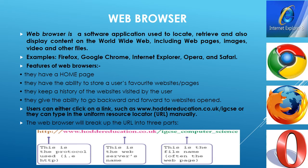The web browser breaks up the URL into three parts. For example, www.hardereducation.co.uk/igcse_computer_science is converted into: the protocol (http:// or https://), the web server name (hardereducation), and the file name or web page (igcse_computer_science) displayed in the browser.